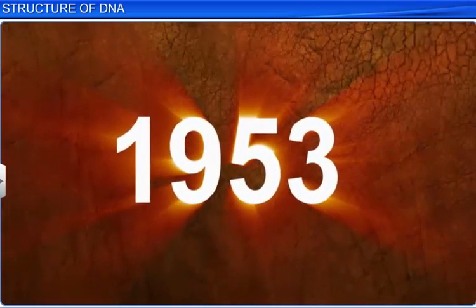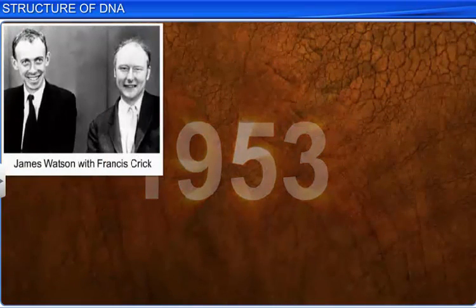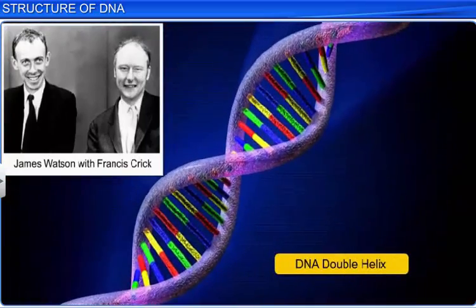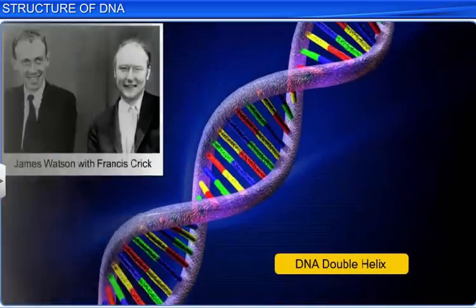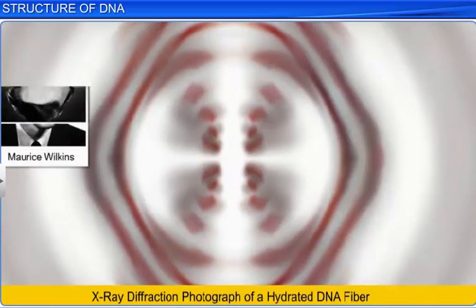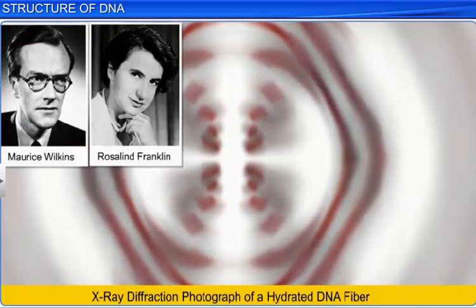Finally, in 1953, James Watson and Francis Crick proposed a simple double helix model for the structure of DNA. They did this with help from the X-ray diffraction data that was created by Maurice Wilkins and Rosalind Franklin.